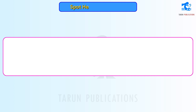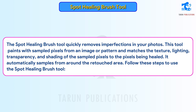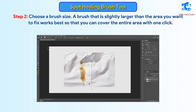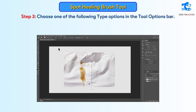Retouching Tools. Spot Healing Brush Tool quickly removes imperfections in your photos. This tool paints with sample pixels from an image or pattern and matches the texture, lighting, transparency, and shading of the sampled pixels to the pixels being healed. It automatically samples from around the retouched area. Follow these steps to use the Spot Healing Brush Tool. Step 1: Select the Spot Healing Brush Tool. Step 2: Choose a brush size — a brush that is slightly larger than the area you want to fix works best so that you can cover the entire area with one click.